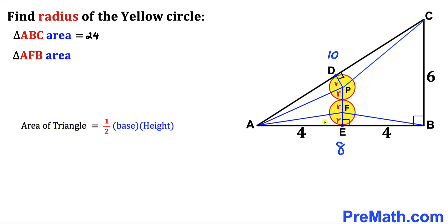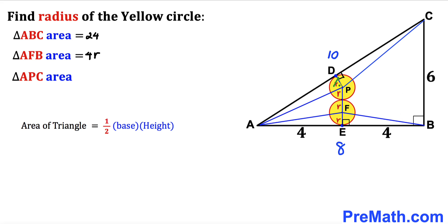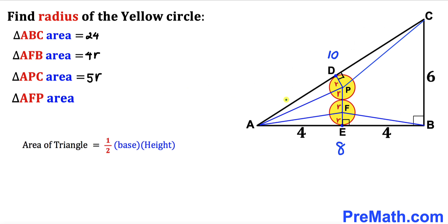Now let's calculate the area of triangle APB. Using the same formula — one-half times base times height — our base is 8 and our height is the radius r. So the area of triangle APB is one-half times 8 times r, which simplifies to 4r. Next, for triangle APC, the base is 10 and the height is r, so the area is one-half times 10 times r, which equals 5r.